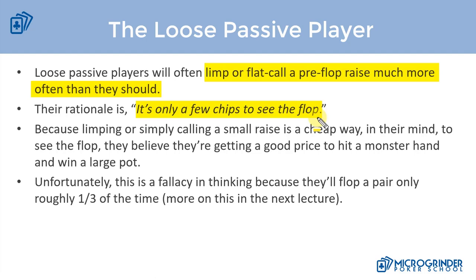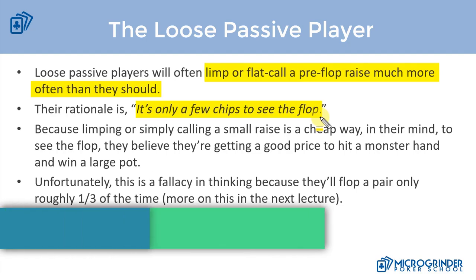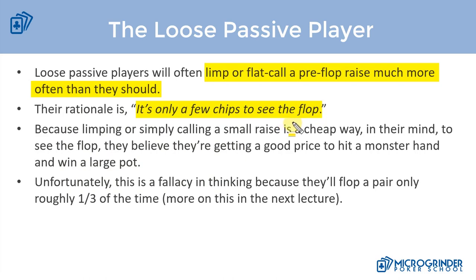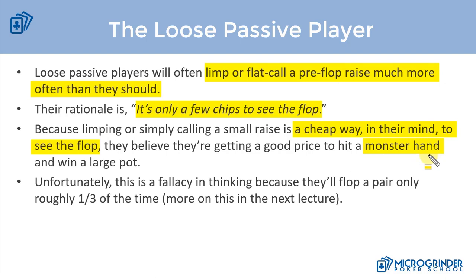In their mind, whether open limping, over limping, or calling a raise — whether they're the first to call or see that two or three other players have called — they see it as a cheap way to see the flop. The issue is that they think they're getting a good price to try to hit a monster hand, but unfortunately there's a fallacy in their thinking.